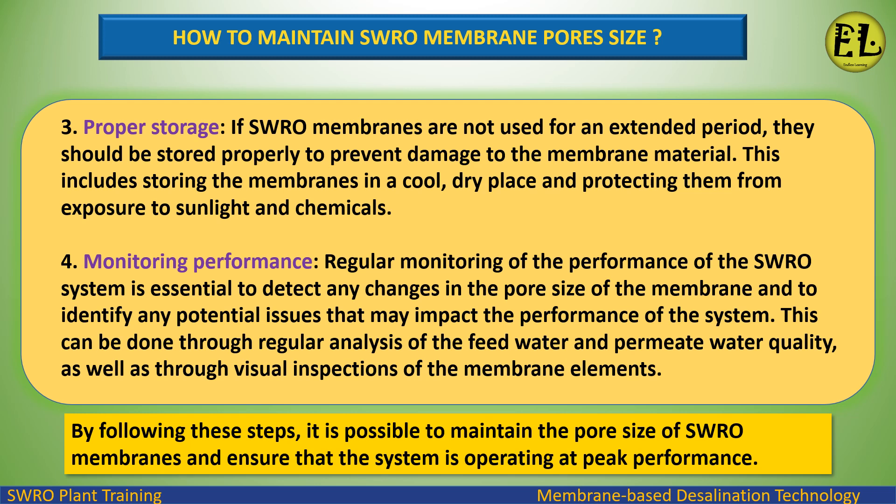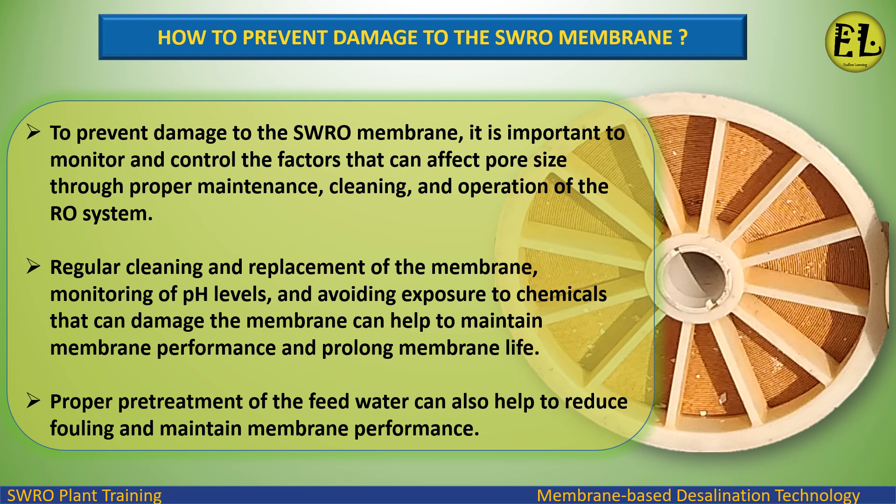By following these steps, it is possible to maintain the pore size of SWRO membranes and ensure that the system is operating at peak performance. To prevent damage to the SWRO membrane, it is important to monitor and control the factors that can affect pore size through proper maintenance, cleaning, and operation of the RO system. Regular cleaning and replacement of the membrane, monitoring of pH levels, and avoiding exposure to damaging chemicals can help maintain membrane performance and prolong membrane life. Proper pretreatment of the feed water can also help to reduce fouling and maintain membrane performance.